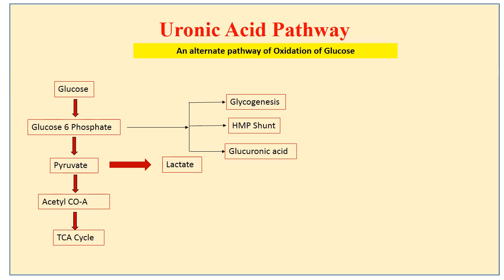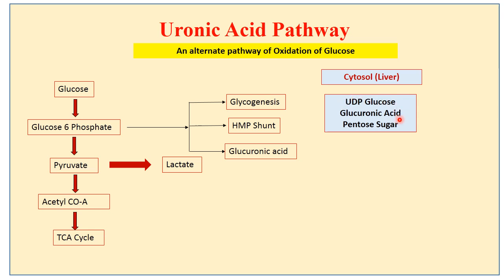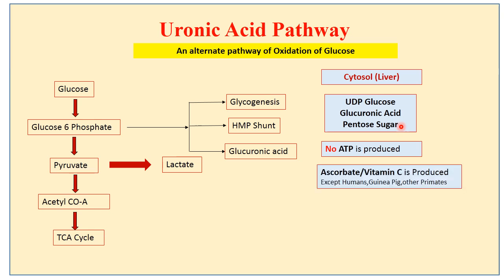Glucuronic acid is produced in the Uronic Acid Pathway. The salient features of this pathway are: it occurs in the liver cytosol. The important products produced include UDP glucose, glucuronic acid, and pentose sugars. Another important product is ascorbate or vitamin C, but exceptionally it is not produced in humans, guinea pigs, and other primates. Moreover, no ATP is produced in this pathway, which is a similarity with the HMP shunt or the pentose phosphate pathway.